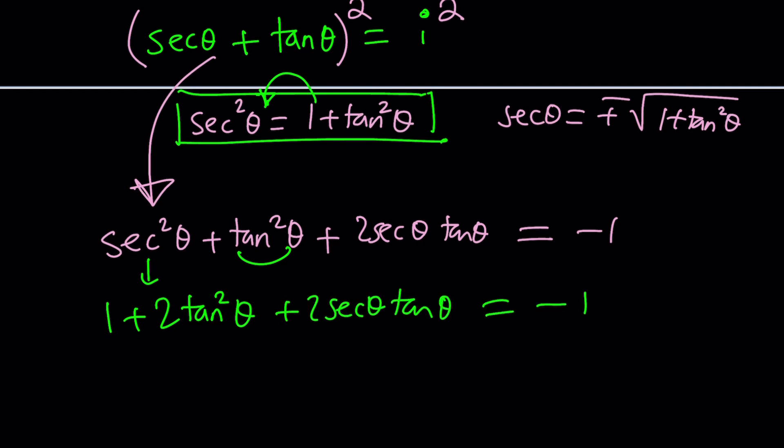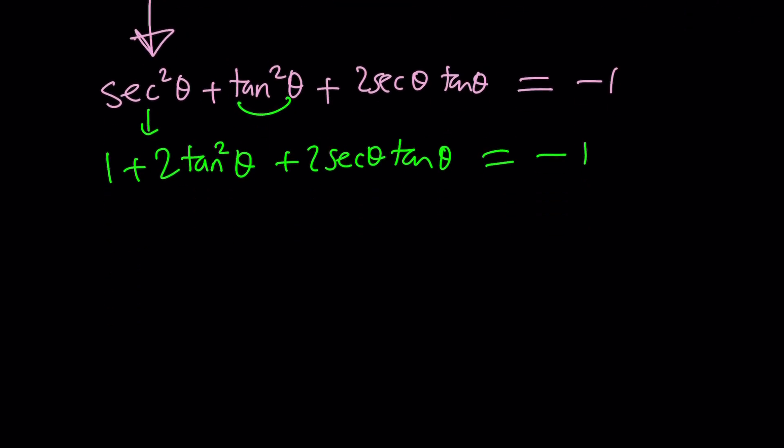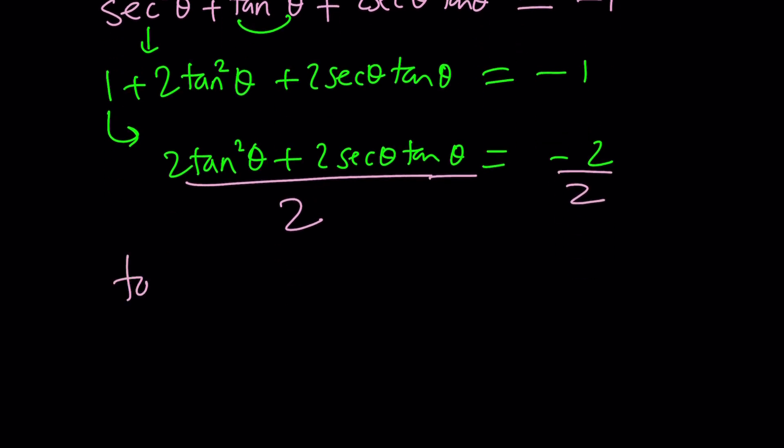This looks messy, but when you do something about this, it's going to turn into something super nice. Subtract 1 from both sides: you get 2tan²θ + 2sec θ·tan θ = -2. Does it look familiar? Now divide both sides by 2, and you'll see it's just amazing.